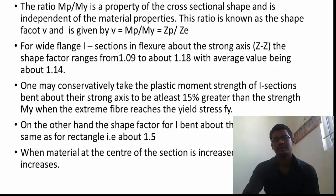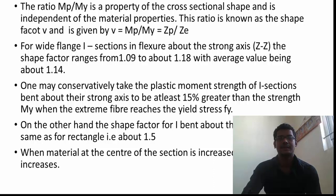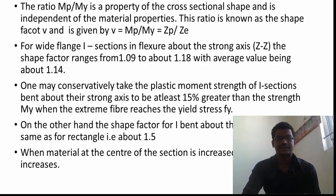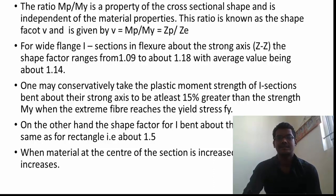Since the stresses are the same, we equate between the lever arms. For a wide-flange I-section in flexure bent about the strong axis, the shape factor ranges from 1.09 to about 1.18, with an average value of about 1.14. As the shape factor increases, the strength capacity decreases. One may consistently take the plastic moment strength of an I-section bent about its strong axis to be at least 15% greater than the yield moment MY when the extreme fiber reaches the yield stress FY. The shape factor for an I-section bent about its minor axis, as for a rectangle, is 1.5. When material at the center of the section is utilized, the value of the shape factor increases.